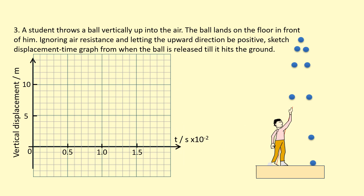Final example: a student throws a ball vertically up into the air and the ball lands on the floor in front of him. Ignoring air resistance and letting the upward direction be positive, sketch a displacement-time graph for the ball from when it is released until it hits the ground. The ball leaves the hand at high velocity, and gravity decelerates it so that at the very top the vertical velocity is zero — it has to stop in order to turn around. The ball is actually being decelerated for the entire upward motion.